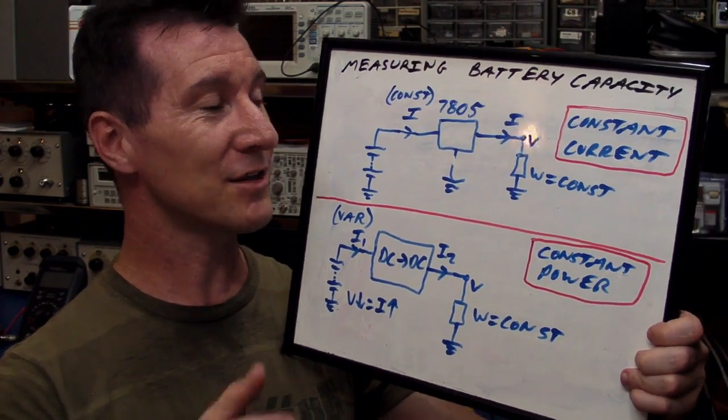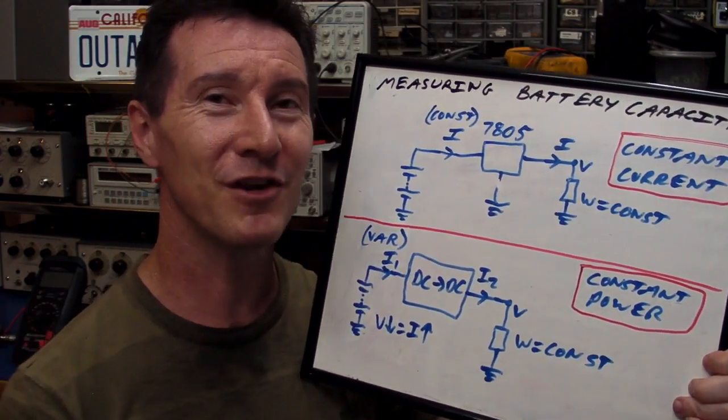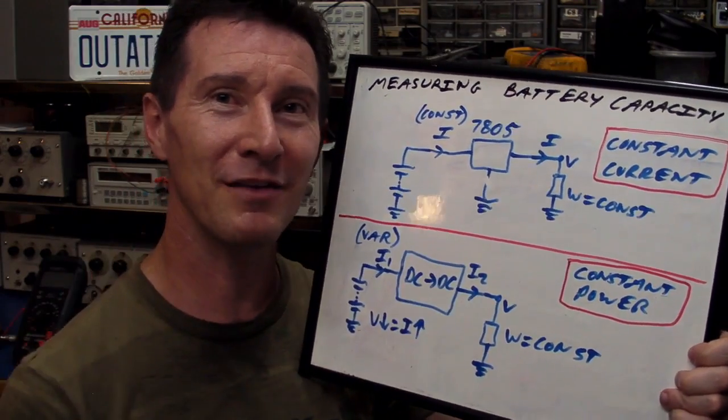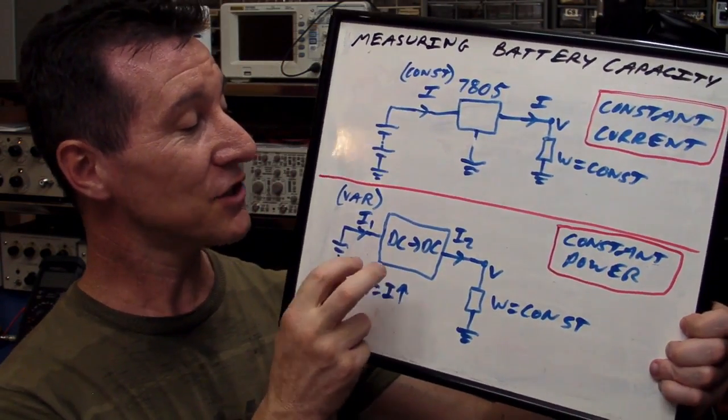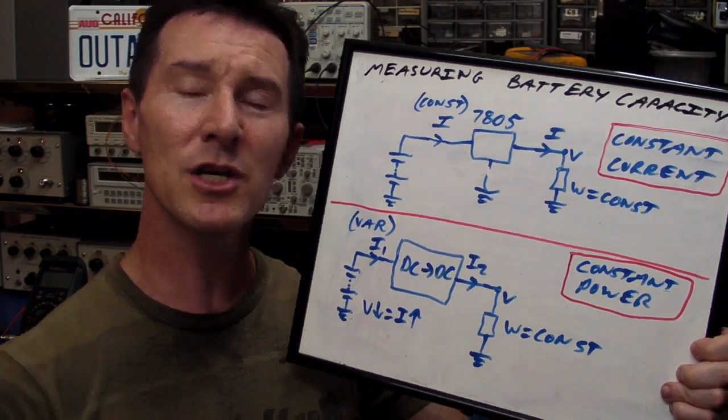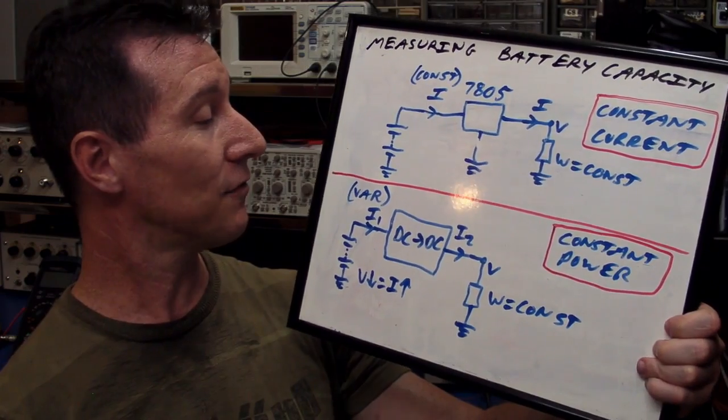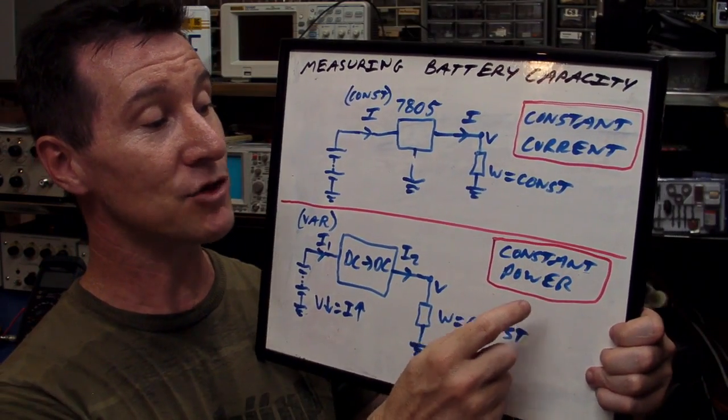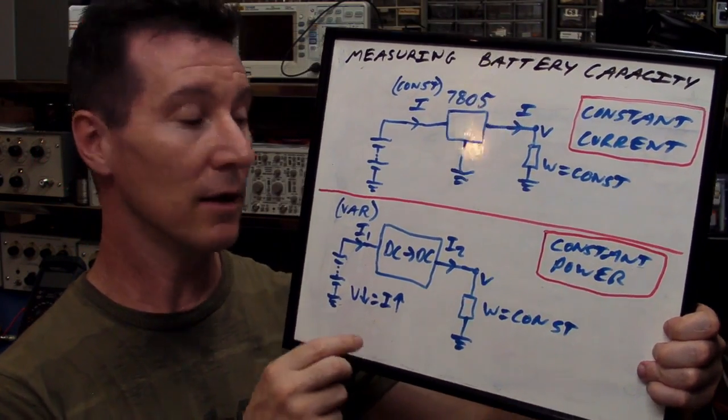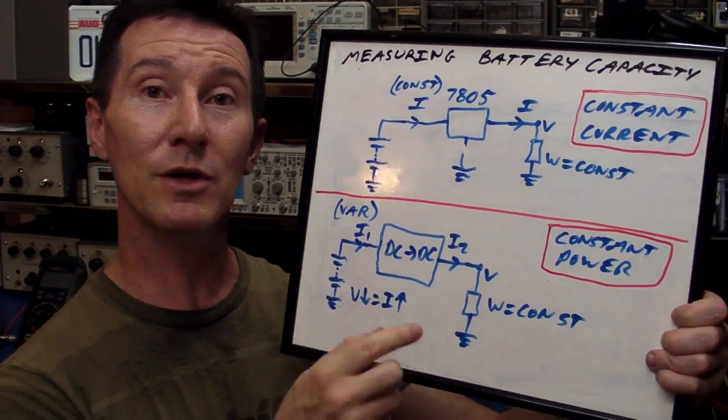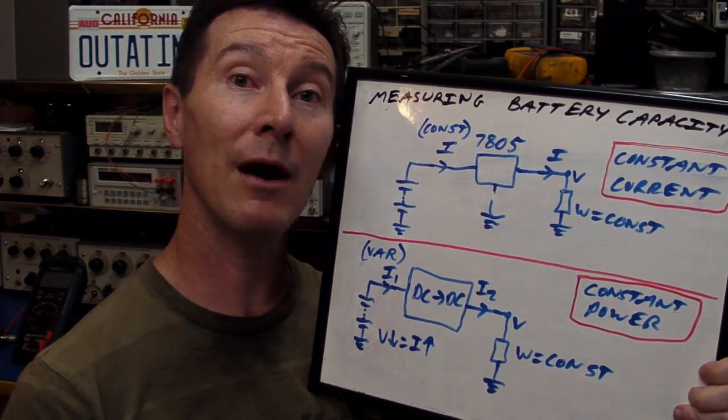I won't go into details about how the efficiency of converters drops at both ends of the current scale, but let's not go there. If it's an ideal DC to DC converter, which for the sake of many arguments you can say it is an ideal converter, then you want to be measuring constant power. So that's why when you're measuring the capacity of the battery, you want to simulate a constant power load.